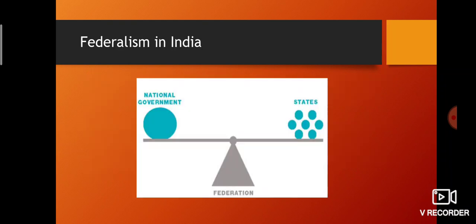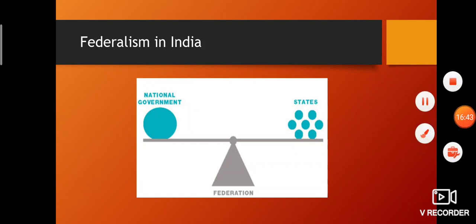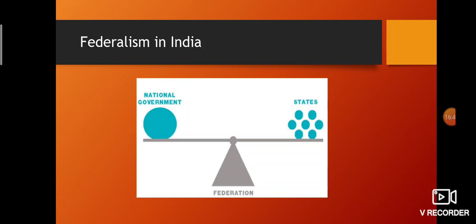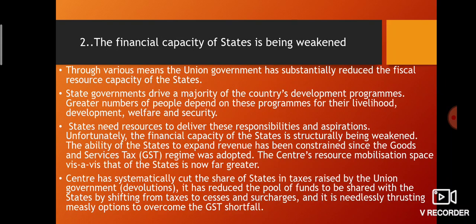The next editorial is on Federalism in India. India is a federal country with a unitary bias — more powers are given to the Centre, but states are not weak. We have a national government and state government in balance. The Finance Commission plays a major role as the balancing wheel of fiscal federalism.